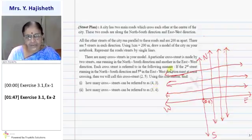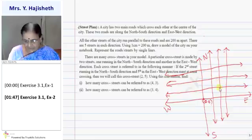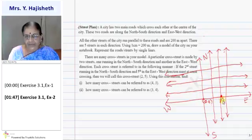Now, they have asked me the question, what is given? Each cross street is referred to the following manner. If second street running in north south, second north south means, second means, one skip, second. Means, somewhere, second street means, here, this is my point A, okay?